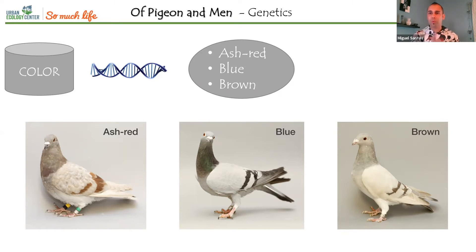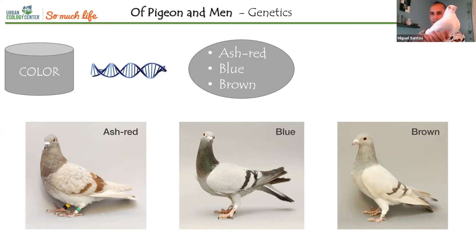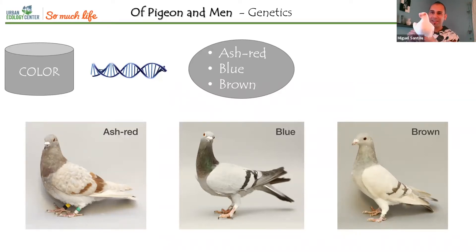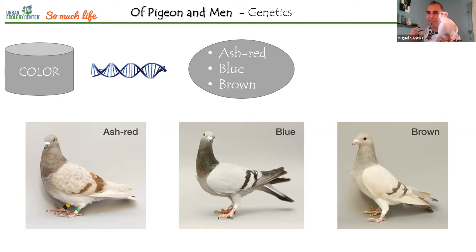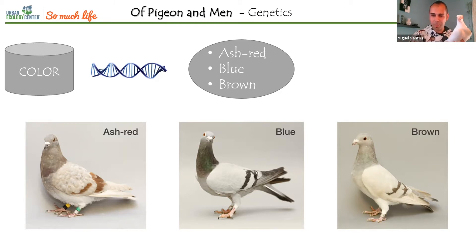Here I have one of my birds. Can you type in the chat what color this bird is? The chat says white — great — but actually this bird is blue and carries brown. White is not a color; it's the absence of color. So this bird is hiding two colors. Cocks can hide two colors because color is located in the sex chromosome.